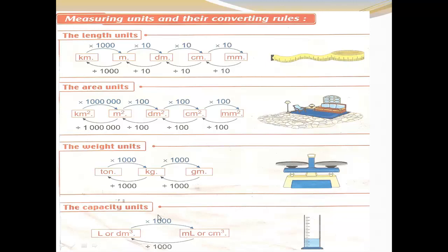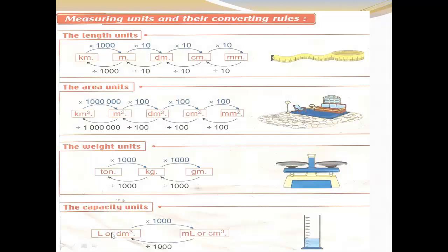The last units: capacity. Liter, also known as decimeter cube, and milliliter. From liter or decimeter cube to milliliter, multiply by one thousand. From milliliter to liter, divide by one thousand.